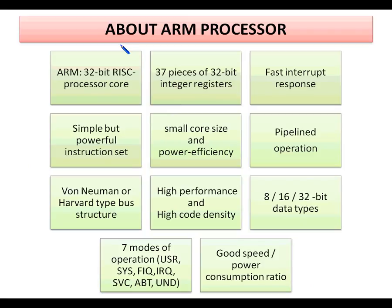ARM is a 32-bit processor core, which means it can address up to 2^32 address locations — approximately 4 GB of memory locations. ARM totally consists of 37 32-bit registers, among which only 16 registers are visible to the user, such as registers R0 to R15 and CPSR. All 21 remaining registers are used for system-level programming as well as for handling exceptions.